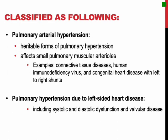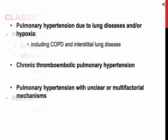The World Health Organization has classified pulmonary hypertension into five categories: pulmonary arterial hypertension, which includes heritable forms and diseases affecting small pulmonary muscular arterioles, as in connective tissue diseases, HIV, and congestive heart failure with left-to-right shunts; pulmonary hypertension due to left-sided heart disease, including systolic and diastolic dysfunction and valvular disease; pulmonary hypertension due to lung diseases and/or hypoxia, including COPD and interstitial lung disease; chronic thromboembolic pulmonary hypertension; and pulmonary hypertension with unclear or multifactorial mechanisms.